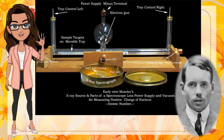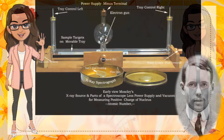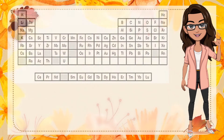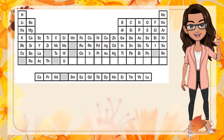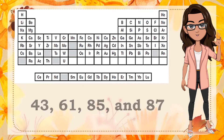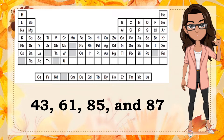The frequency is proportional to the charge of the nucleus, or the atomic number. When the elements were arranged according to their atomic numbers, there were four gaps in the table. These gaps corresponded to the atomic numbers 43, 61, 85, and 87. These elements were later synthesized in the laboratory through nuclear transmutations.